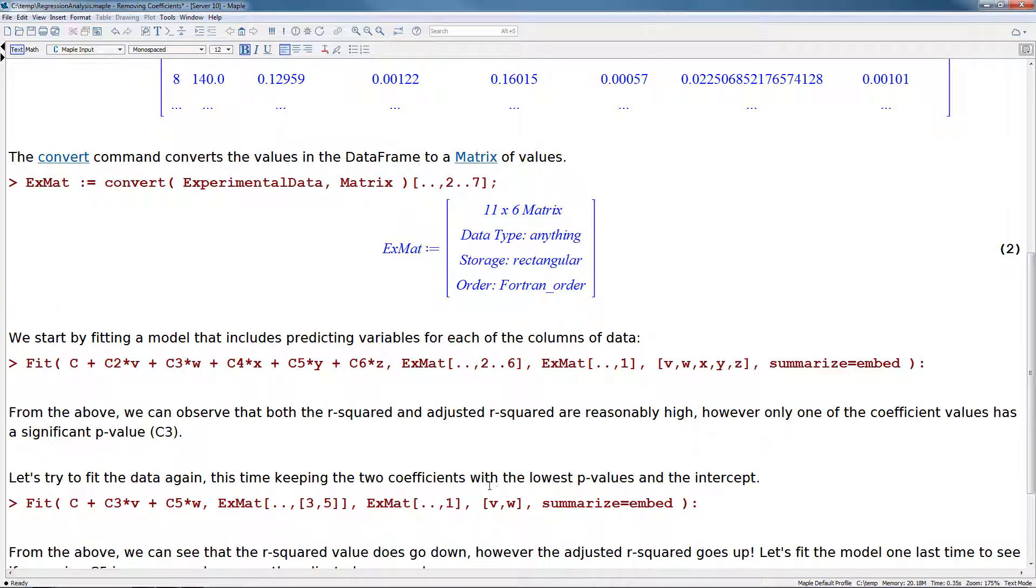And now let's get into using the fit command. So the idea here is that we're going to be fitting a model that includes predicting variables for each of these columns of data. So to do so, we're going to do fit of a model which includes an intercept C, and then C2 times V, C3 times W, C4 times X, C5 times Y, and C6 times Z. The data we're looking at is the second through sixth columns of our matrix. And our dependent variable here is going to be the first column. So the X mat 1. In this case, we don't just have one variable we're looking at anymore. We have five, so we're going to give it this list here, V, W, X, Y, and Z. And finally, we're going to return this in an embedded summary using the summarize equals embed option.